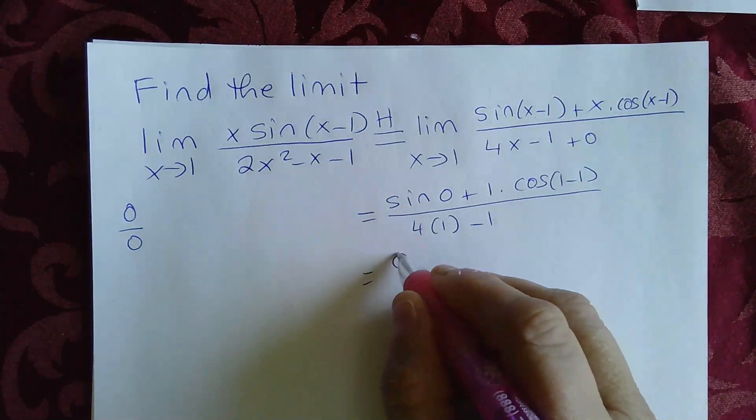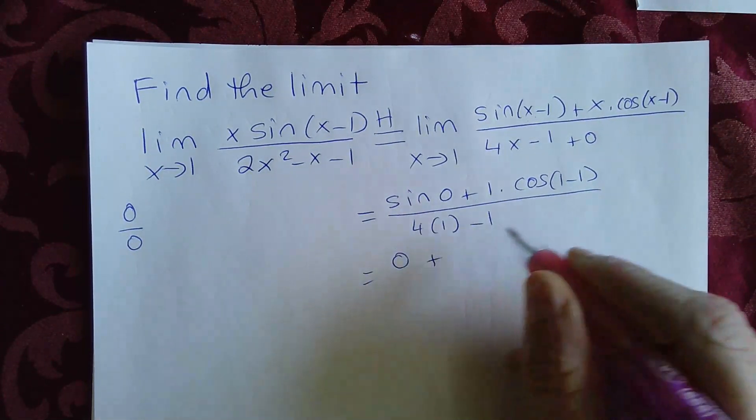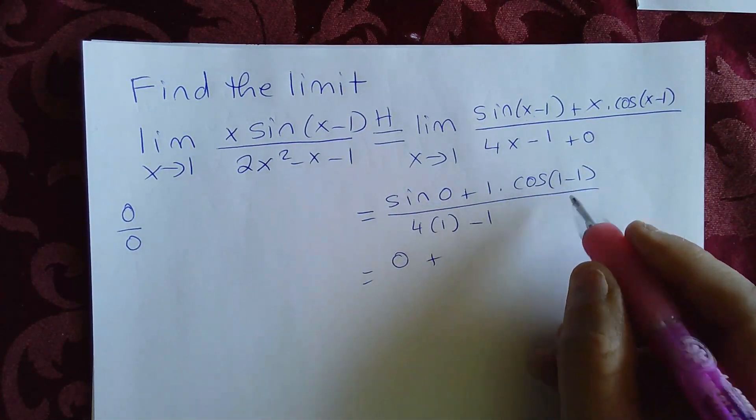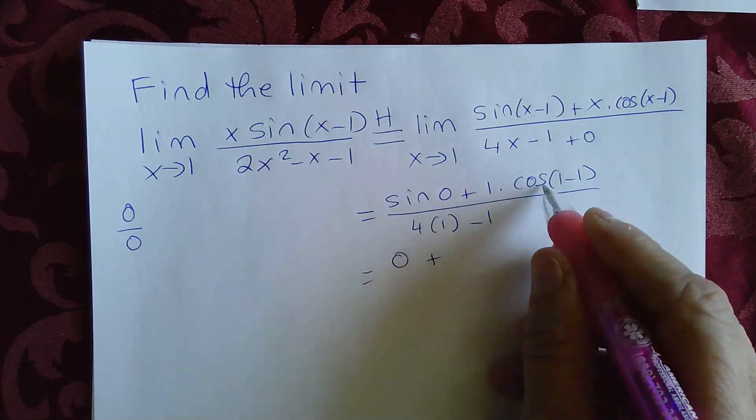So let's see, sine 0 is 0, plus cosine 0, cosine 0 is simply 1, 1 times 1 is 1.